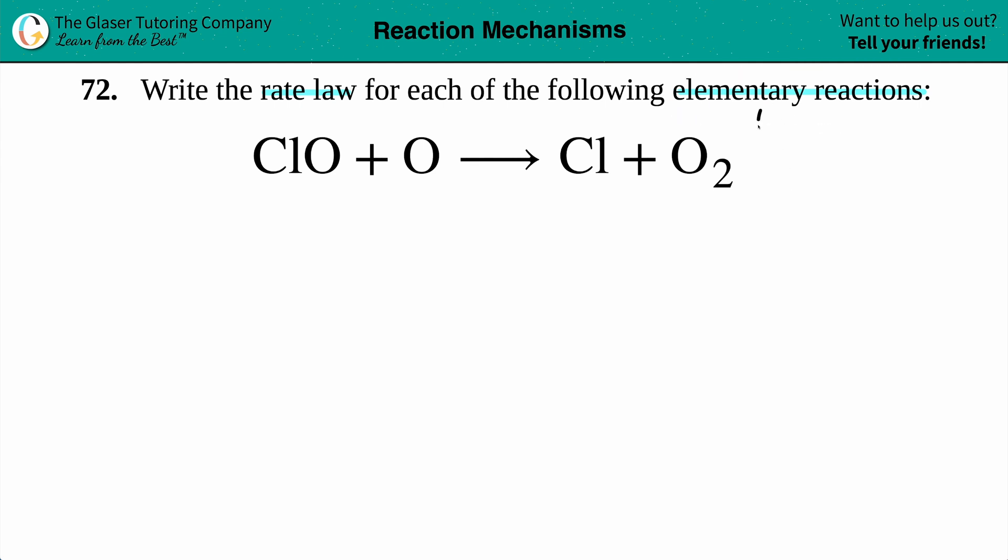They're saying that this balanced equation is an elementary reaction. An elementary reaction, especially when you're talking about kinetics, is a single step reaction. So it's only a one-stepper, one-step reaction. So what you see is what you get. There's no hidden other steps that will mess up the rate law in any way.